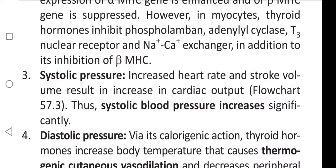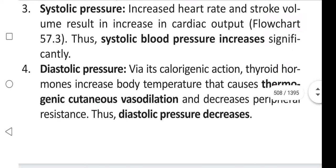Increased heart rate and stroke volume result in an increase in cardiac output, thus systolic blood pressure increases significantly. Via its calorigenic action, thyroid hormones increase body temperature, which causes thermogenic cutaneous vasodilation and decreases peripheral resistance, thus diastolic pressure decreases.